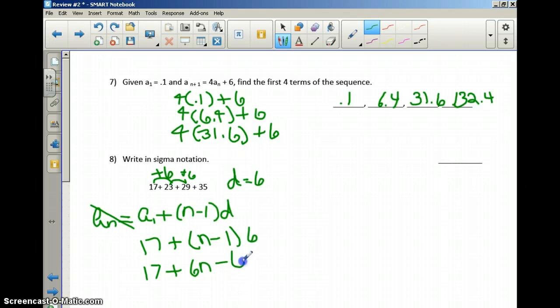So I have 17 plus 6n minus 6. So 6n plus 11 is the overall pattern of what's going on to make this series. So in sigma notation, I have sigma. I have one term up to four terms. So n is going from 1 to 4. And my pattern is 6n plus 11.